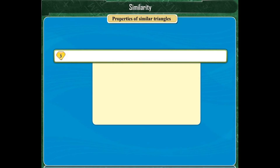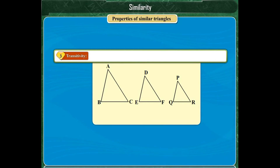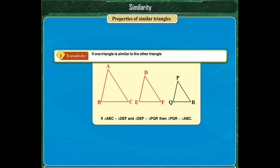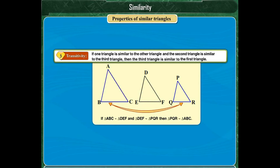The third property is transitivity. If triangle ABC is similar to triangle DEF, and triangle DEF is similar to triangle PQR, then triangle PQR is similar to triangle ABC. In other words, if one triangle is similar to a second, and the second is similar to a third, then the third is similar to the first.